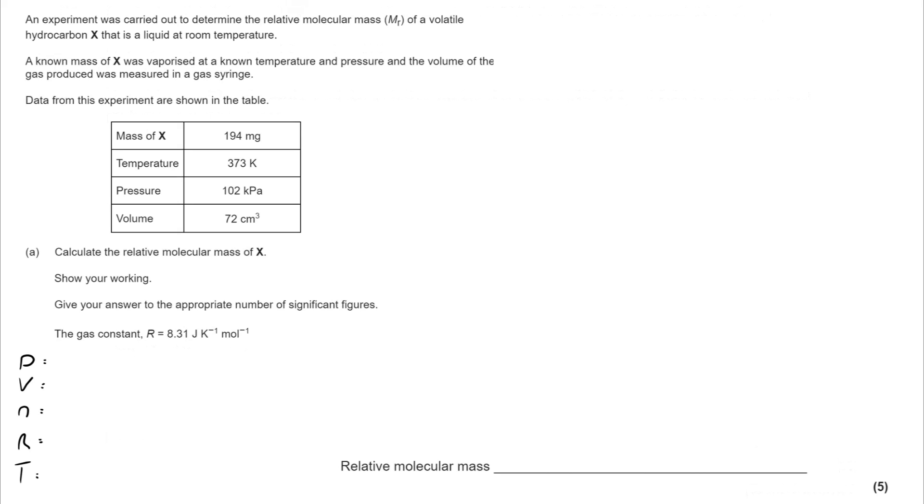Then you can start to work through to find the information that you can add in. I've got the 8.31 for the molar gas constant, 102 kilopascals for the pressure, my volume is 72 centimeter cubed, and my temperature is 373K. So I've got four components. I know I'm going to be working out N. So that's classed as X.